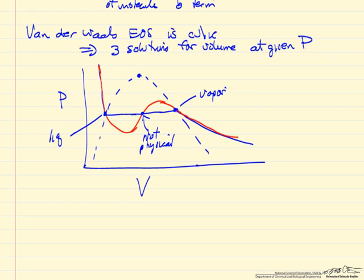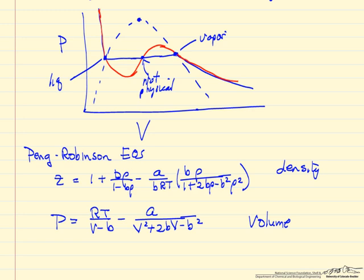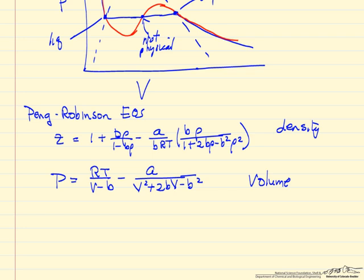And then there are more complicated equations of state. And so I've just listed the Peng-Robinson equation of state in density form, or the volume form. Again, you can see there are two parameters. If we look at the volume form, A and B. The Peng-Robinson equation is also a cubic equation of state, so it's going to have three roots, similar behavior to the van der Waals equation of state.